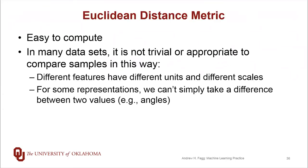So first, let's talk about distance metrics, and in particular, we've been making very heavy use of the Euclidean distance metric, so this is just the sum squared differences between feature values in two feature vectors. This distance metric is really easy for us to compute, however, there are lots of situations where it's not really very appropriate or even trivial to compute this.